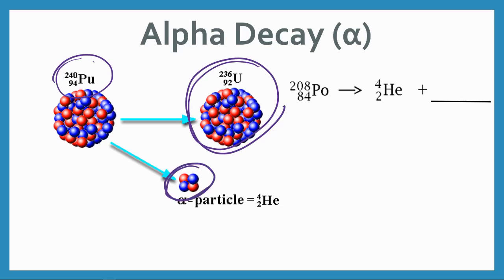We're starting off with this element here. It's got 208 things in the nucleus and 84 of those things are protons. But when it decays, we know that it's going to release four particles. So 208 minus four gives us 204.